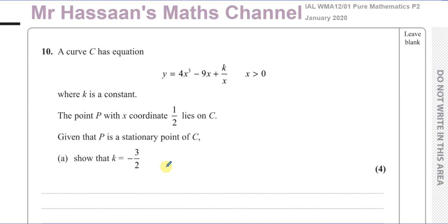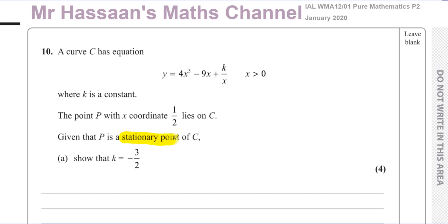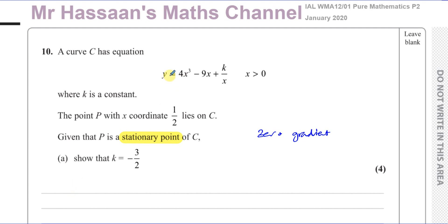A stationary point — the key word here is stationary point. A stationary point is a point of zero gradient. It could be a turning point, a maximum, a minimum, or a point of inflection. The key thing is the gradient of the curve at the stationary point is always zero. And the gradient of a function is given by dy/dx, which is what you get when you differentiate the function.